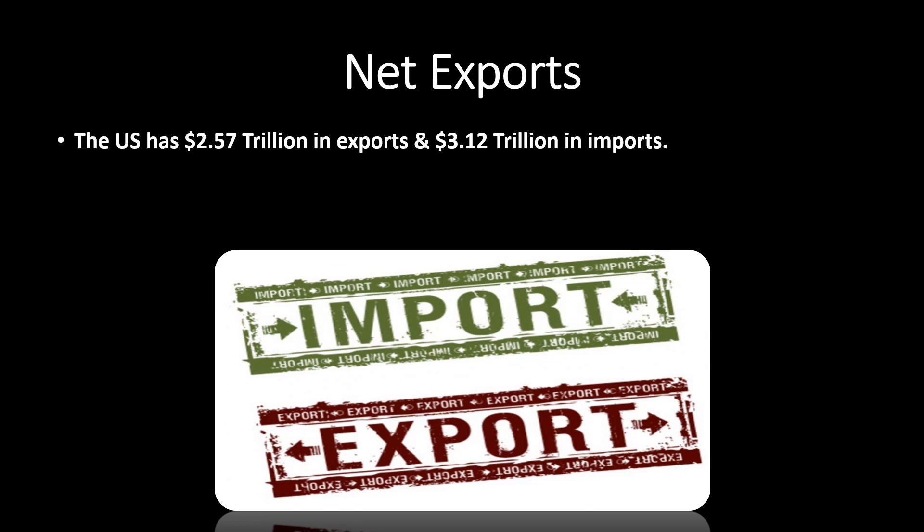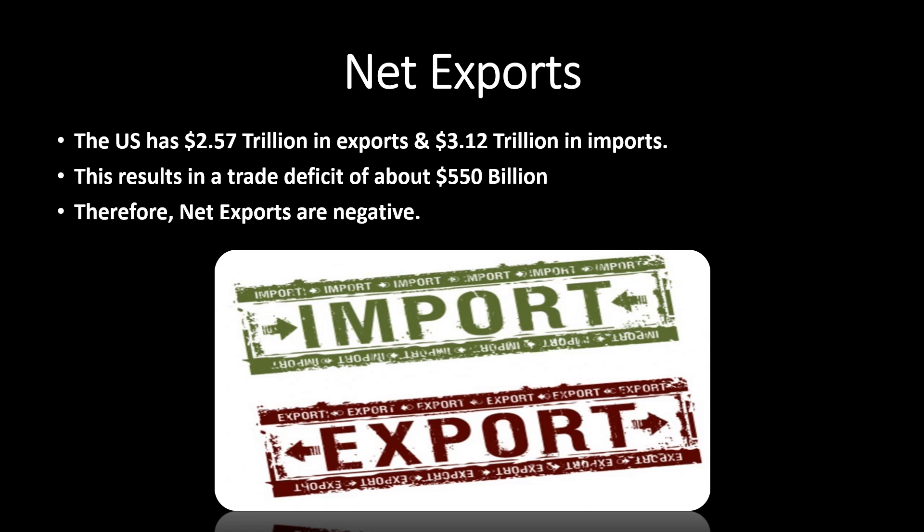Currently, as of the making of this video, the US has $2.57 trillion in exports and $3.12 trillion in imports. Net exports make up about 3% of the overall economy and do carry a negative sign in this expenditure approach of GDP — but as discussed, not necessarily a bad thing. We currently have a trade deficit of about $550 billion. If you have any questions, feel free to come in and ask.